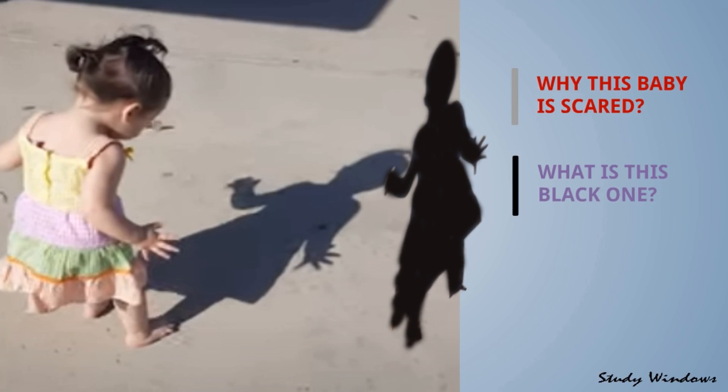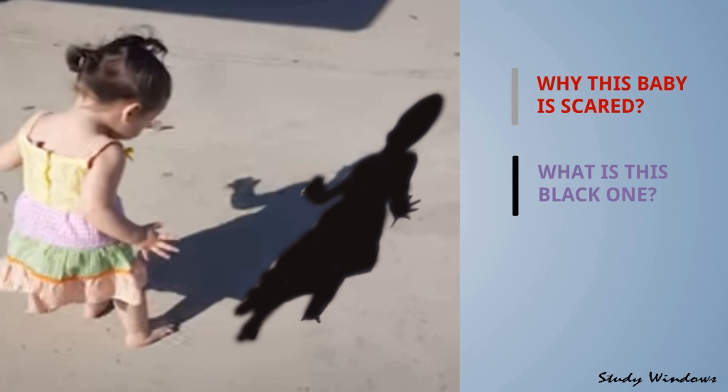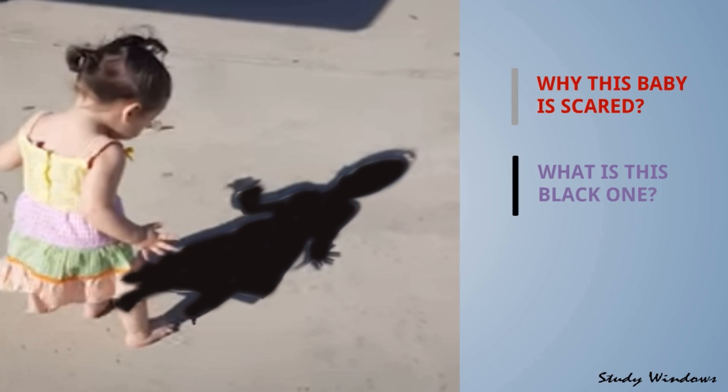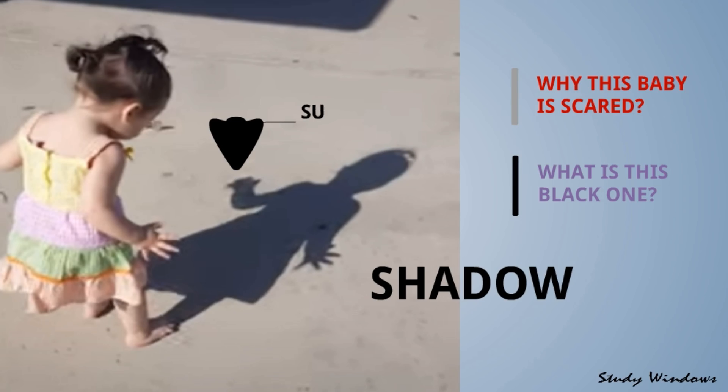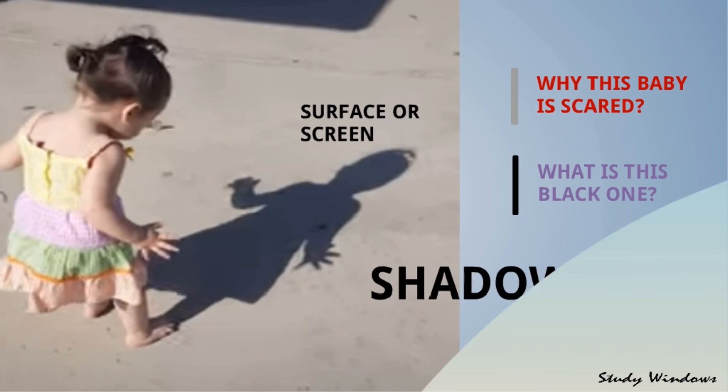She was thinking it's a giant or a ghost, but this is known as shadow. The surface or space where the shadow is formed is known as screen, and the baby girl is an object. It is daytime because light is there. Look at this one more video - this is a shadow. What do you think whose shadow is this?